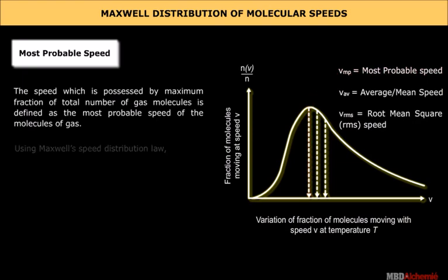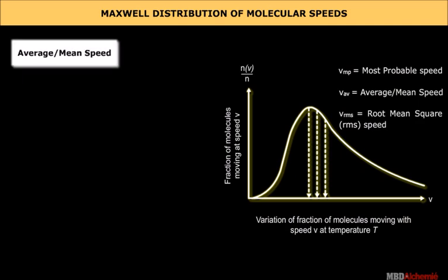Using Maxwell's speed distribution law, vmp is equal to √(2KBT/m).